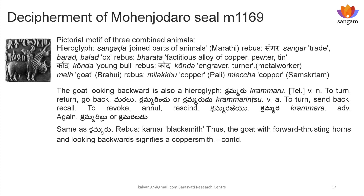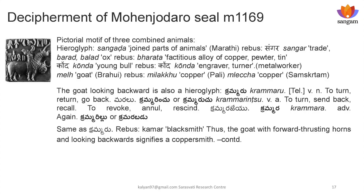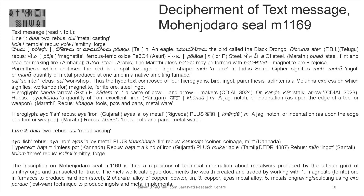Another seal — Mohenjo-daro 1169 — shows the same three animals but with a very long inscription of about 10-plus signs. The joint parts of the animal clearly mean 'Sangada' = joint parts of animals, rebus 'Sangar' in trade. 'Sangada' can also mean a cargo boat. 'Barad-balad' ox = 'Barata' = fictitious alloy of copper, pewter and tin. 'Konda' young bull = engraver/turner. 'Mill' goat 'Milakko' = copper, 'Bletsha' copper. The goat looking backwards — 'Kamaru' = look back, rebus 'Kamar' = blacksmith. All 10-plus signs are clearly markations of metal work catalogues.